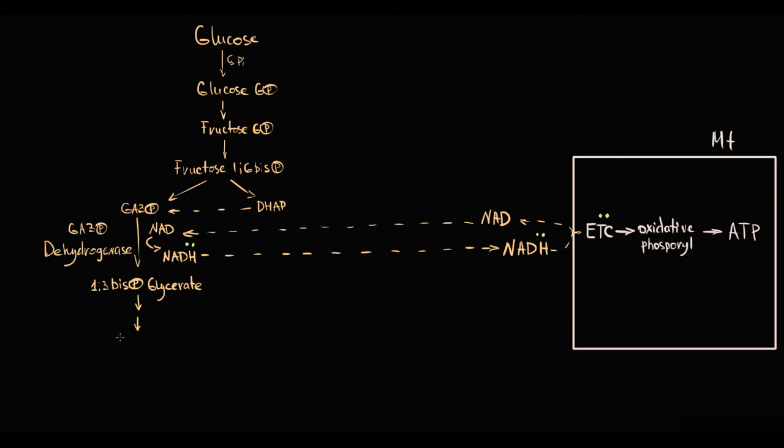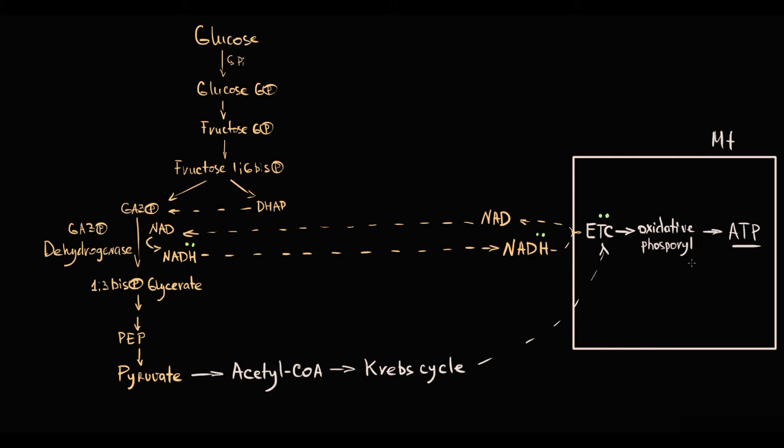During glycolysis, 1,3-bisphosphoglycerate through two consecutive reactions is converted into phosphoenolpyruvate and then to pyruvate. If everything works well, pyruvate is converted into acetyl-CoA, which then undergoes degradation in the Krebs cycle and electron transport chain, resulting in production of energy. But during intense physical exercises, muscle tissue experiences oxygen deficiency.